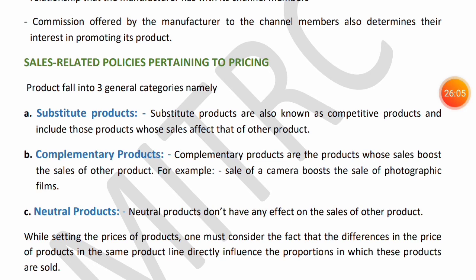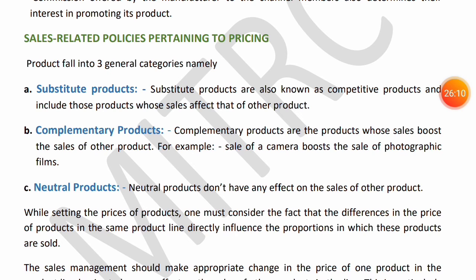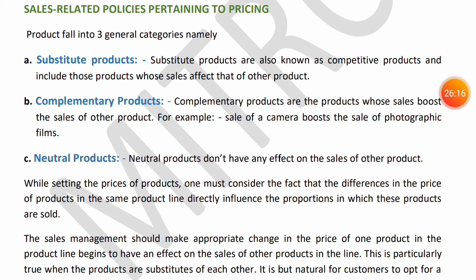Next and last are Sales-Related Policies Pertaining to Price. Any product falls into one of three categories that must be considered when pricing. First are substitute products — where two different products can satisfy the same customer need in the same way. If the demand for one increases, the demand for the other decreases. For example, tea and coffee: if demand for tea is high in an area, coffee demand will be lower. So when forming pricing policies, ensure your product's price does not become so high that customers switch to the substitute product.